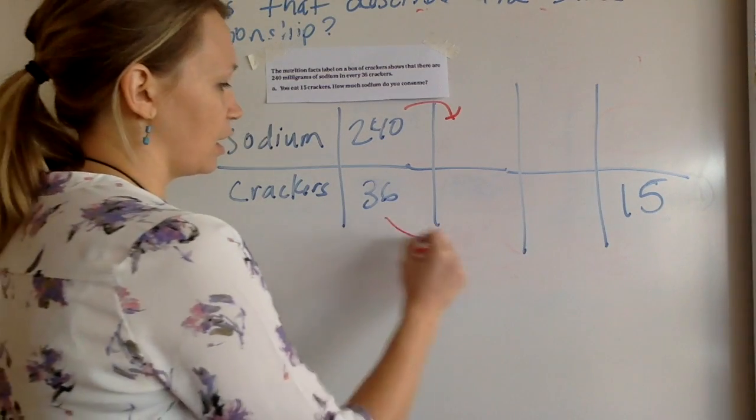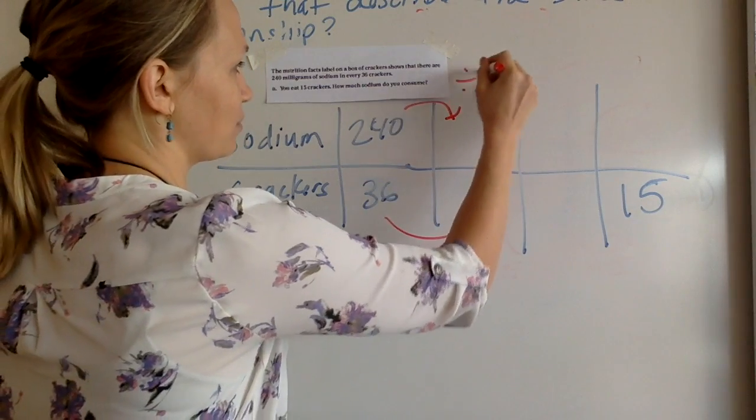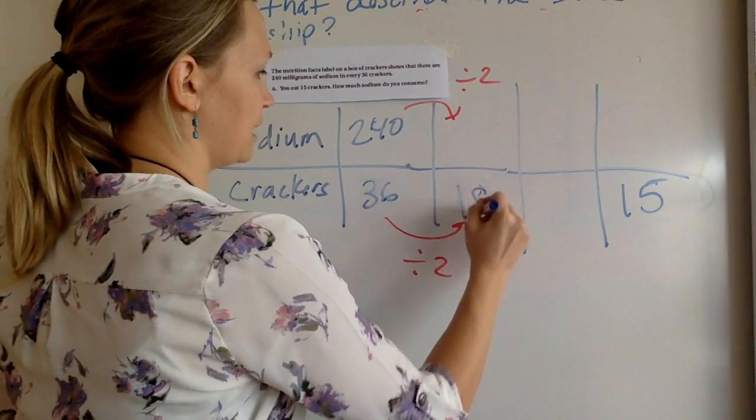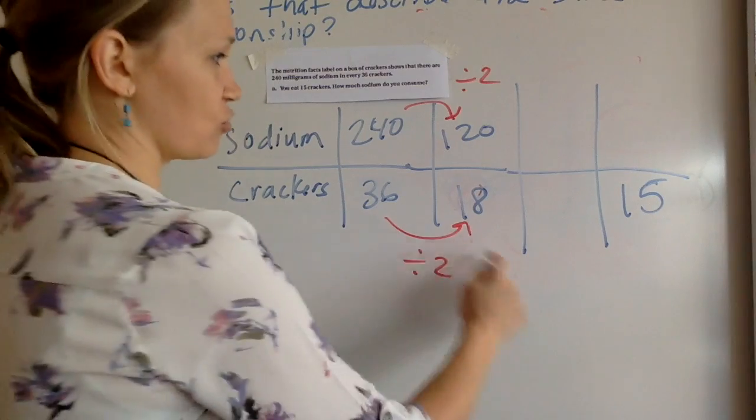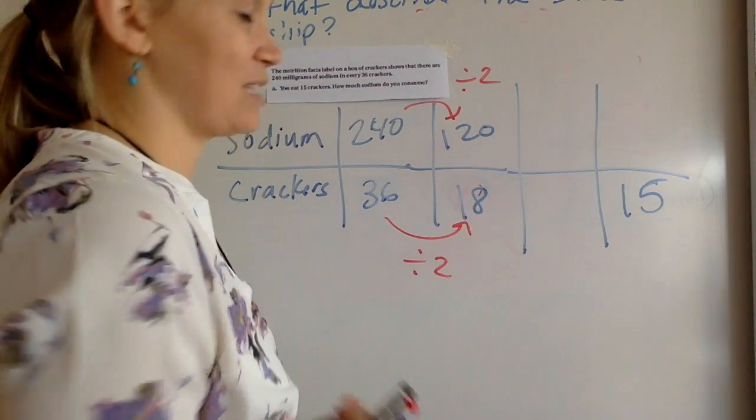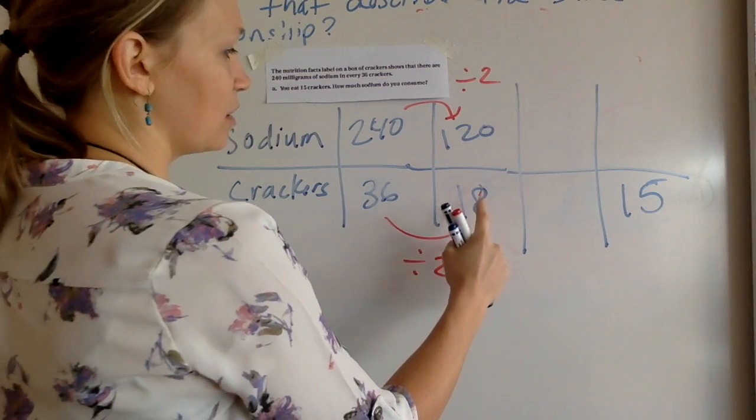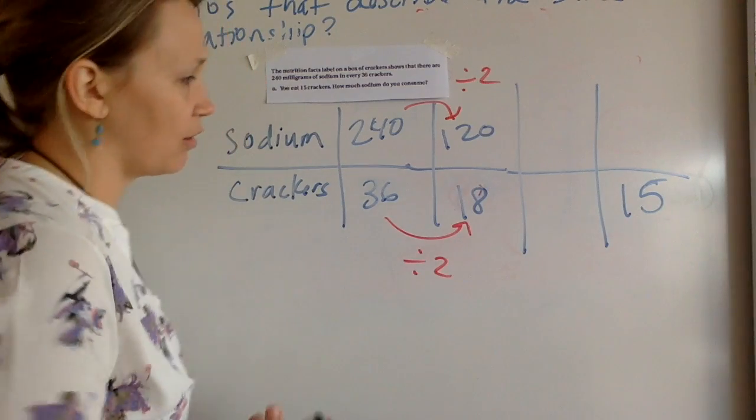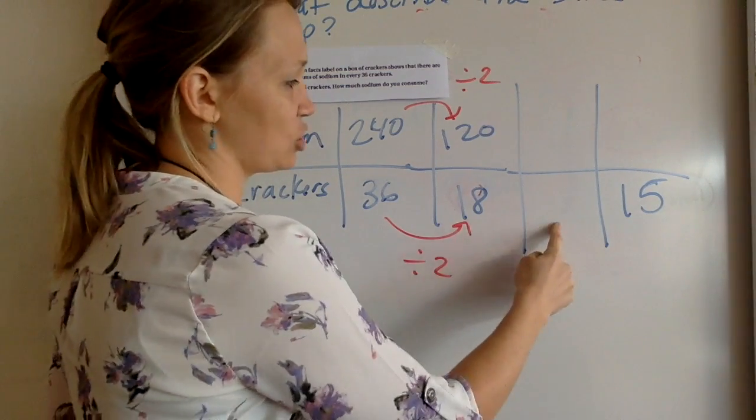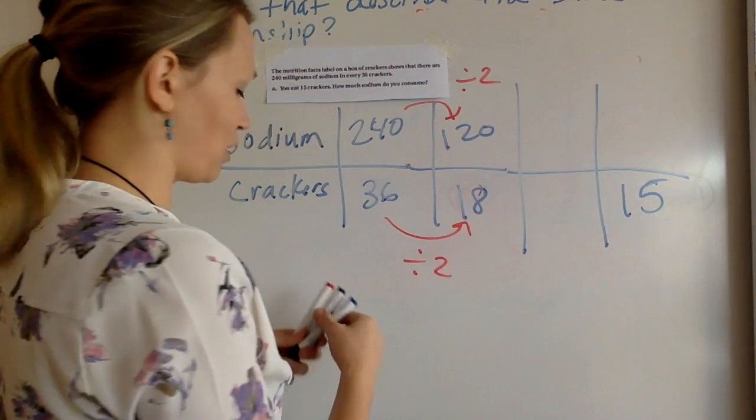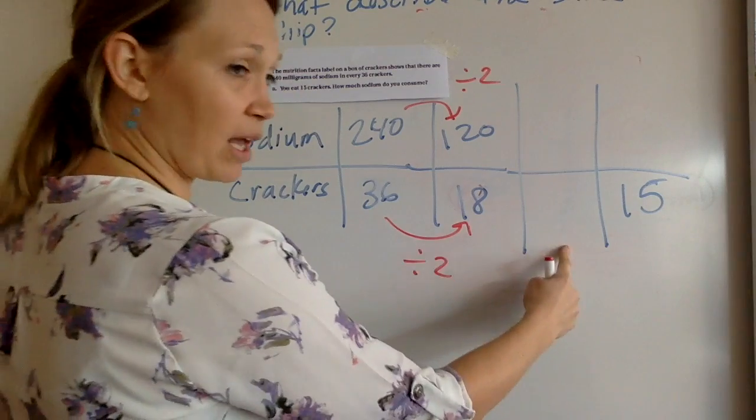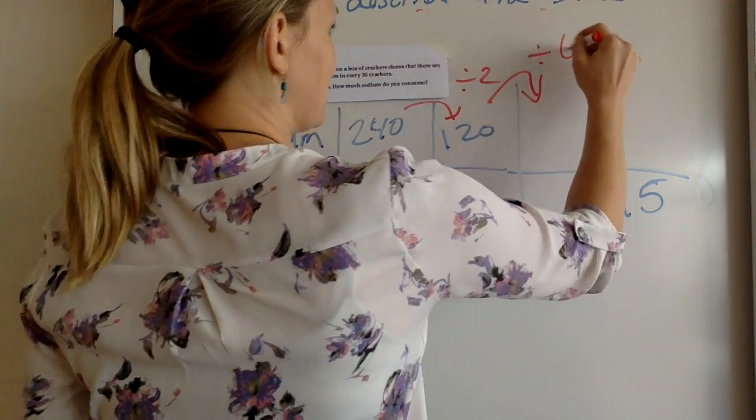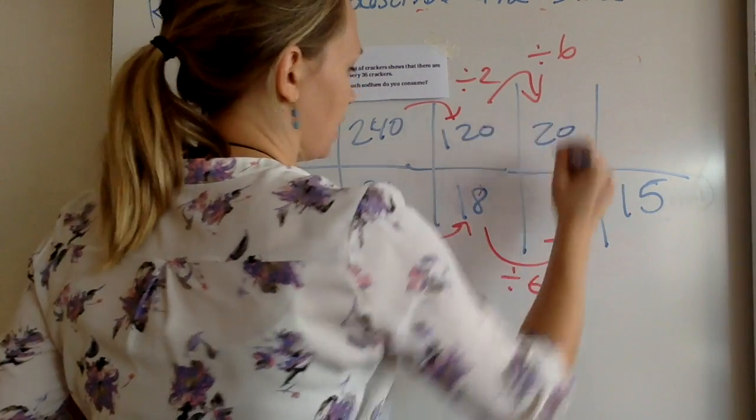So I'm just going to start by, let's say divide by two. So I got to do the same thing to the top, divide by two. So I get 18 and 120. Still, I can't go straight away to 15. So let's think what I can divide by to get to 15. If I divide by six and get three, well, that would work. So let's try that, divide by six, divide by six, and we get 20 and three.